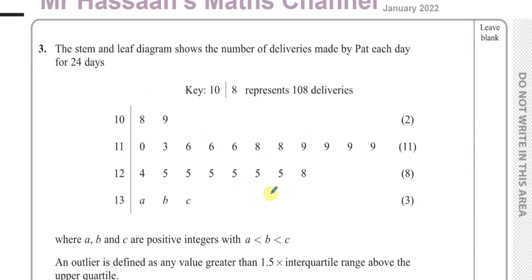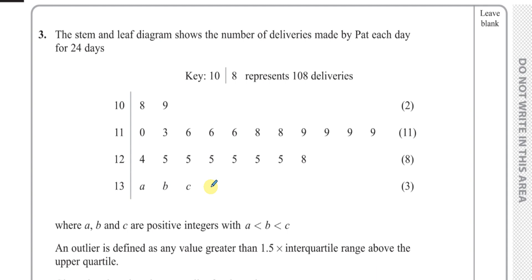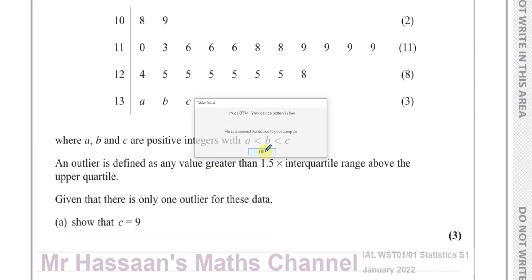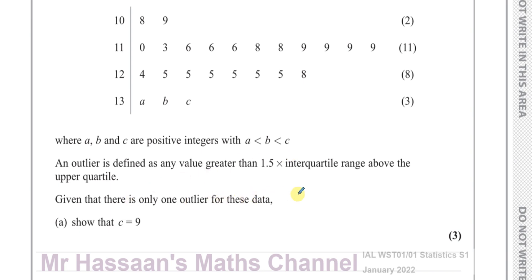There are 24 entries altogether. It says A, B and C are positive integers where A is less than B which is less than C, so C is the biggest out of the three — they're different values in order. An outlier is defined as any value greater than 1.5 times the interquartile range above the upper quartile. Given that there's only one outlier for these data, we need to show that C equals 9.